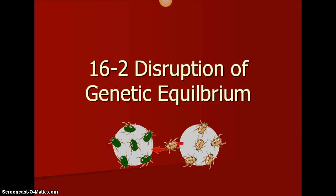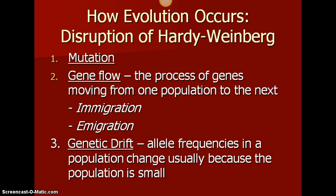Hello class. Today we're going to be looking at Chapter 16, Section 2: Disruption of Genetic Equilibrium. Those five things from Hardy-Weinberg that we mentioned, we're going to go through what those are a little more specifically and explain how they happen normally. A normal population does not follow the ideal situation that Hardy and Weinberg came up with. Instead, we see evolution because of at least one of these five things happening in a population.